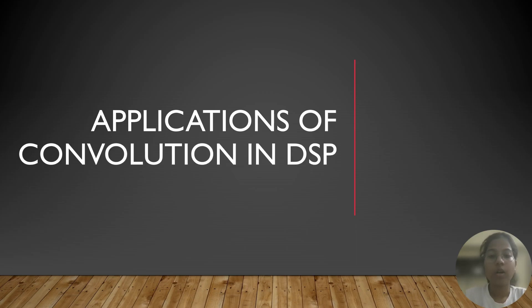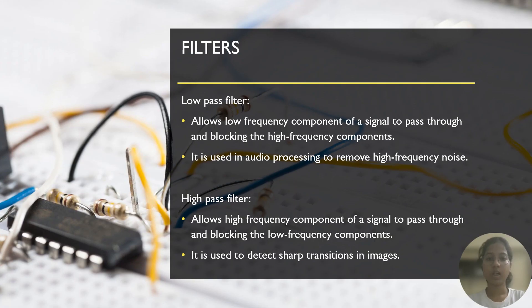Let us now talk about applications of convolution in digital signal processing. The main applications are filtering a signal and processing a signal. A filter is used to modify or enhance a signal by allowing certain frequencies to pass through it while blocking other frequencies. There are basically two types of filters.